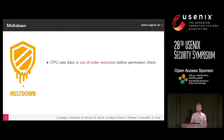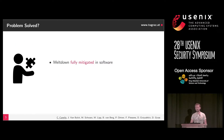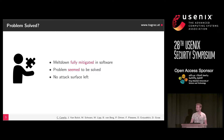Let's start with Meltdown. What is Meltdown? Meltdown uses data in the out-of-order execution before the permission check is actually done. With that, we can read any kernel address, and this is easy because the physical memory is usually mapped in the kernel. This gives us the ability to read arbitrary memory. Afterwards, we were able to fix it with software — KPTI. Newer CPUs already have the fix in hardware, so we don't need KPTI for that anymore. And it seemed like the problem was solved, simply because there's no attack surface left anymore.